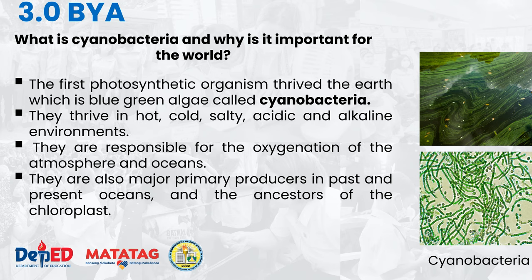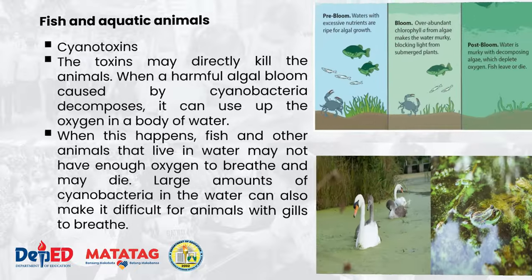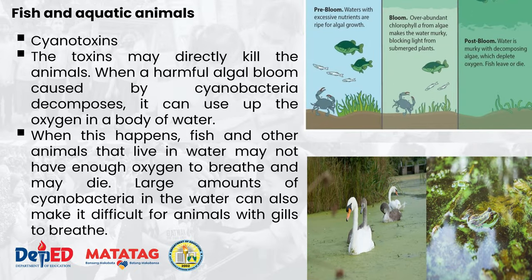The chloroplast is commonly found in plants. There are also some fish and aquatic animals present at that time. Cyanotoxins are toxins that may directly kill animals when a harmful algal bloom caused by cyanobacteria decomposes — it can use up the oxygen in a body of water. When this happens, fish and other aquatic animals may not have enough oxygen to breathe and may die. Large amounts of cyanobacteria in the water can also make it difficult for animals with gills to breathe. In fresh water bodies like lakes and ponds, harmful blooms are most commonly caused by cyanobacteria, which are a kind of single-celled organism called phytoplankton.